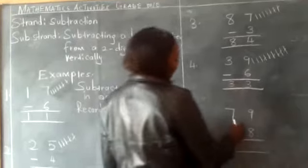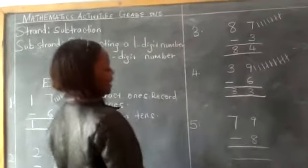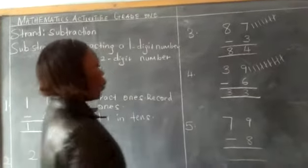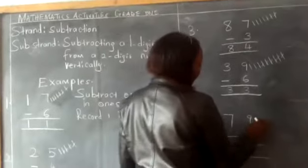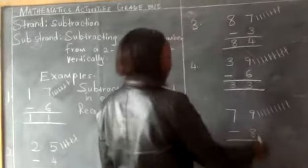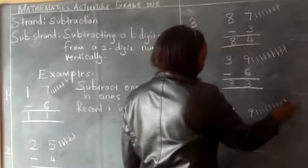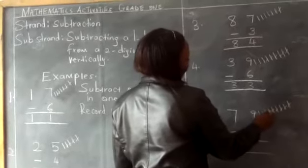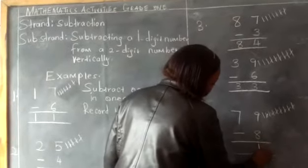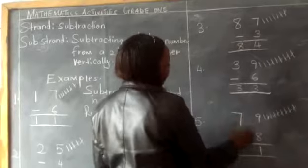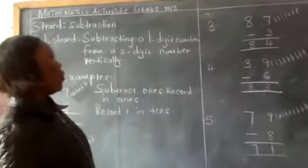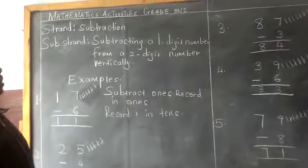The last question: we have 79. Number 79 is a two-digit number. We take away eight, which is a one-digit number. We give value to number nine, then we take away eight. The remaining is one. We bring one under the side of ones. Now we bring down number seven under the side of tens. And this is how we work out our questions on two-digit number subtracting one-digit number vertically.